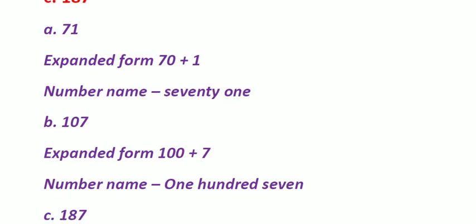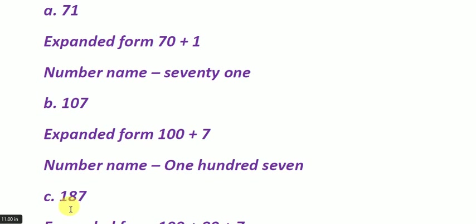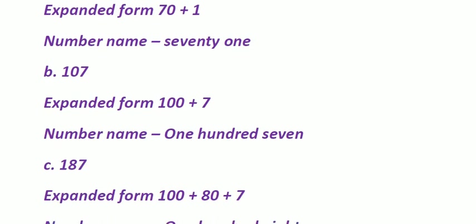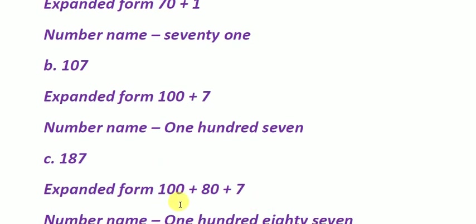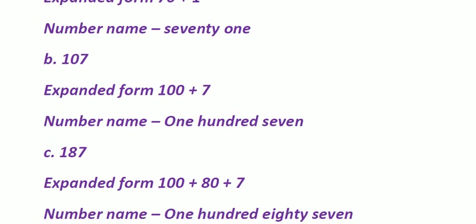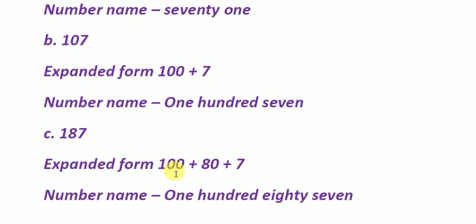Go to the third example. The number I have taken is 187. First write its expanded form: 100, 8 tens, 7 ones. So the expanded form looks like this — 100 plus 80 plus 7. So children, the number name is written as: one hundred, then eighty, then seven — one hundred eighty-seven.